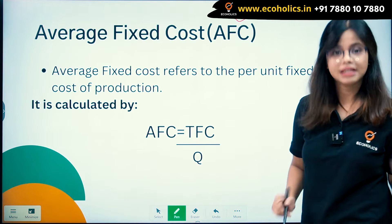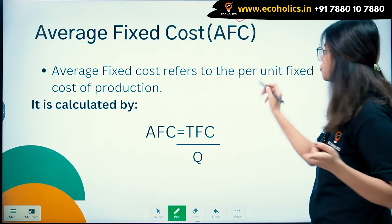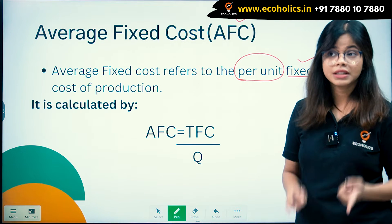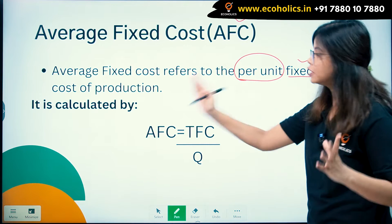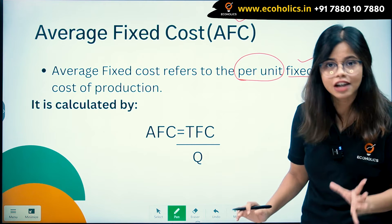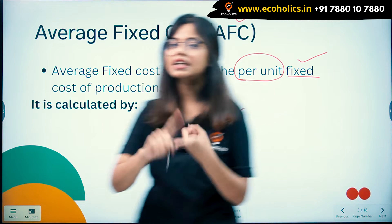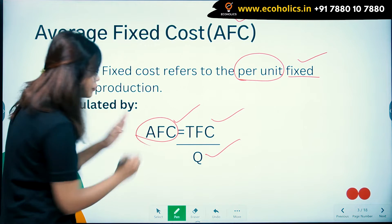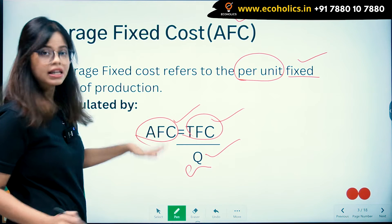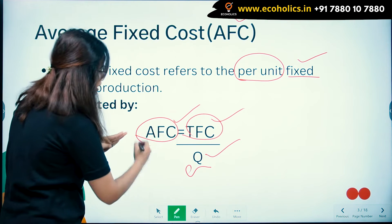So what is AFC? Average fixed cost refers to the per unit fixed cost of production. 'Fixed' means something that does not change. The formula is: AFC equals TFC divided by Q (output). So you divide total fixed cost by output to get average fixed cost.